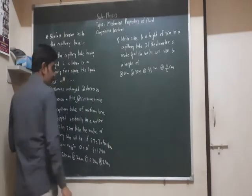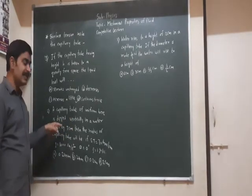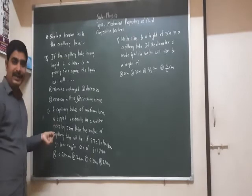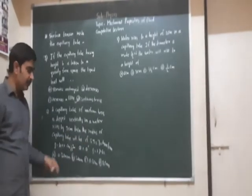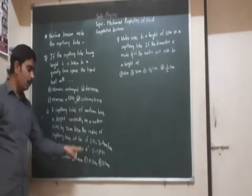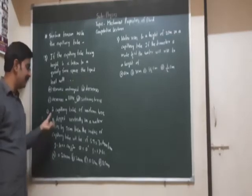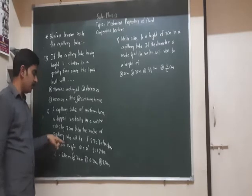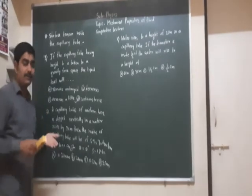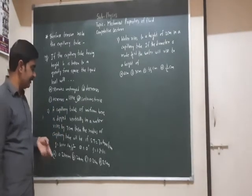Second question: A capillary tube of uniform bore is dipped vertically in water, which rises by 7 cm. The radius of the capillary tube will be — we have to calculate the radius. The surface tension is given. Note: if one value is in SI and one is in CGS, we should convert to the same unit. Here all values are in CGS format, so we keep them as is.